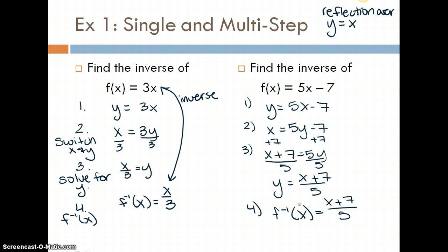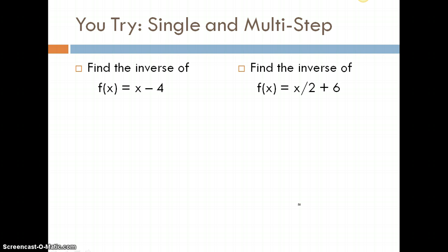Okay, so your two you-tries are to find the inverse of f(x) = x - 4, and then also to find the inverse of f(x) = x/2 + 6. So just so you can see this one a little bit better, f(x) = x divided by 2 plus 6. Remember that you are using opposite operations in order to cancel items out. So addition and subtraction goes together, and division and multiplication goes together.